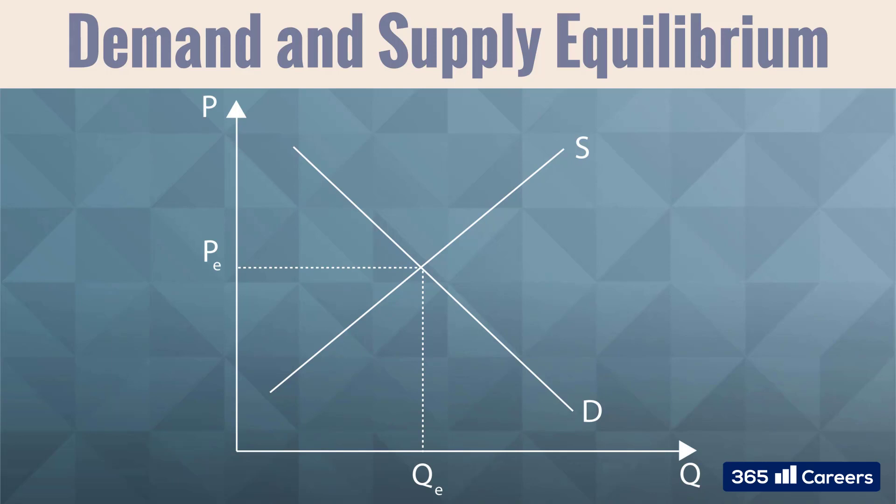What are the mechanisms that push markets towards such equilibrium point? In simple words, the law of demand and the law of supply combined determine the level of equilibrium. Any change in the equilibrium price will result in quantities that are different from the ones observed in equilibrium.